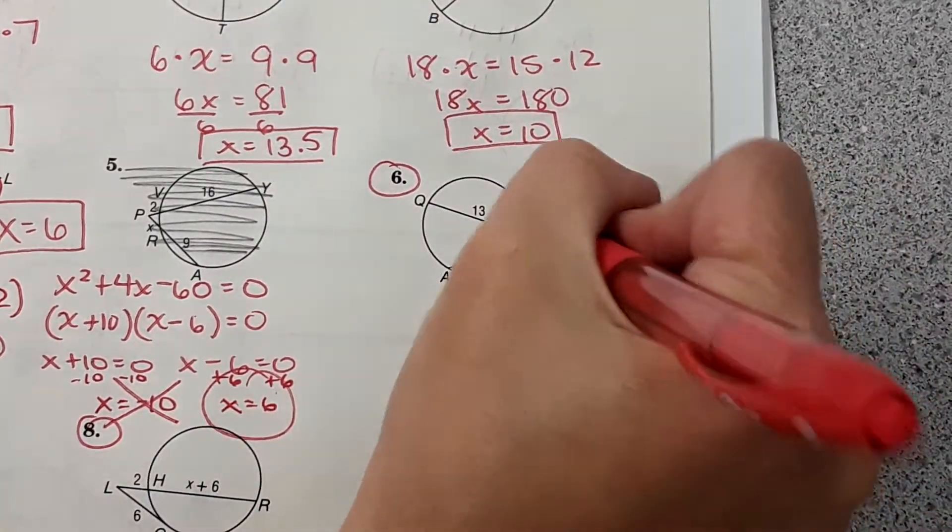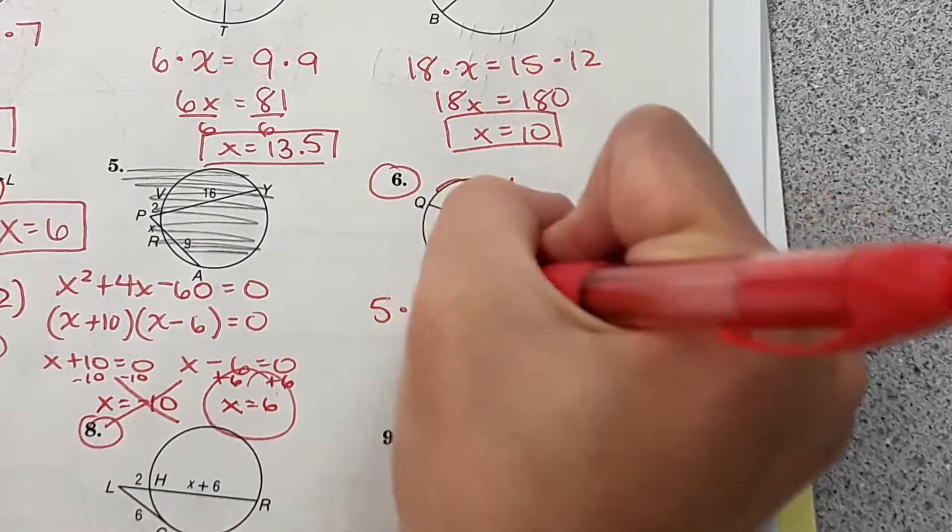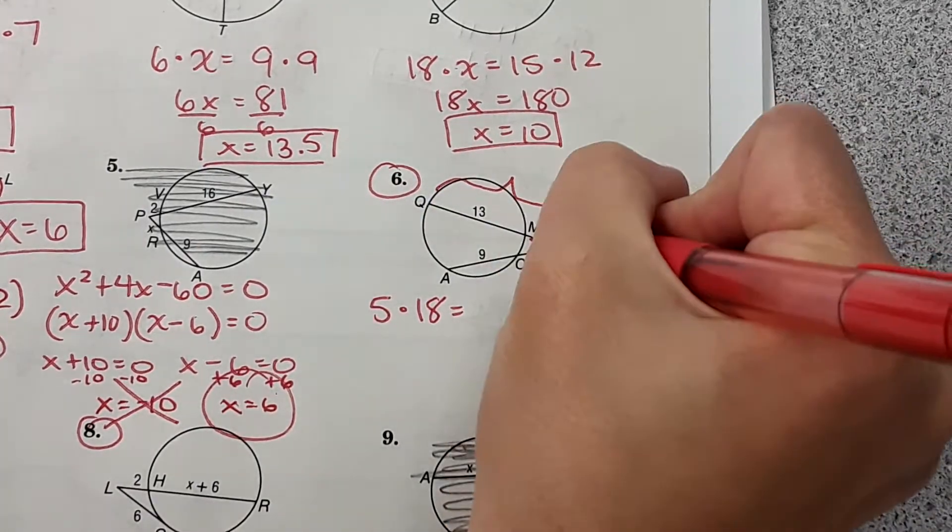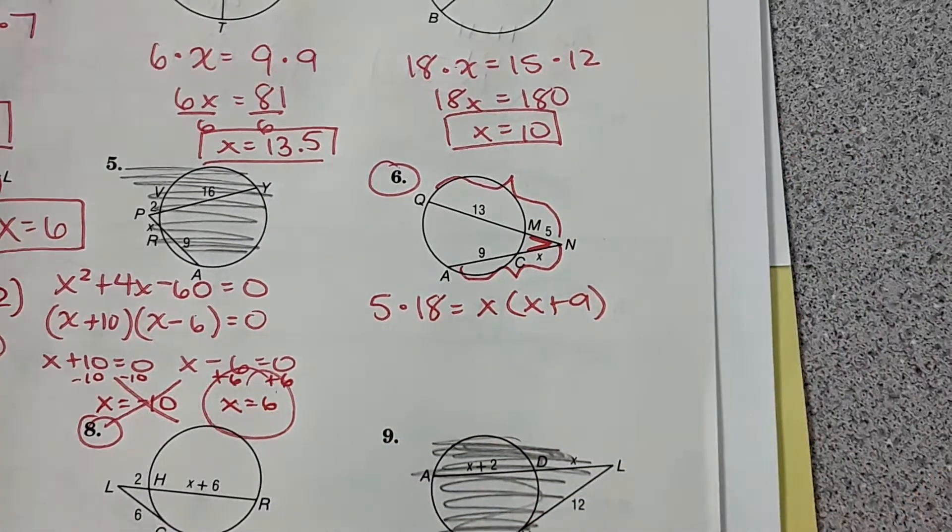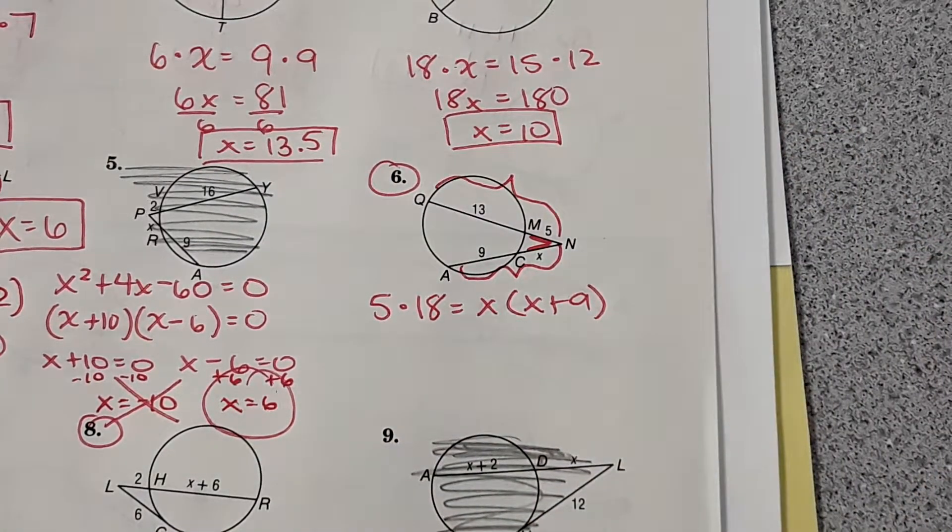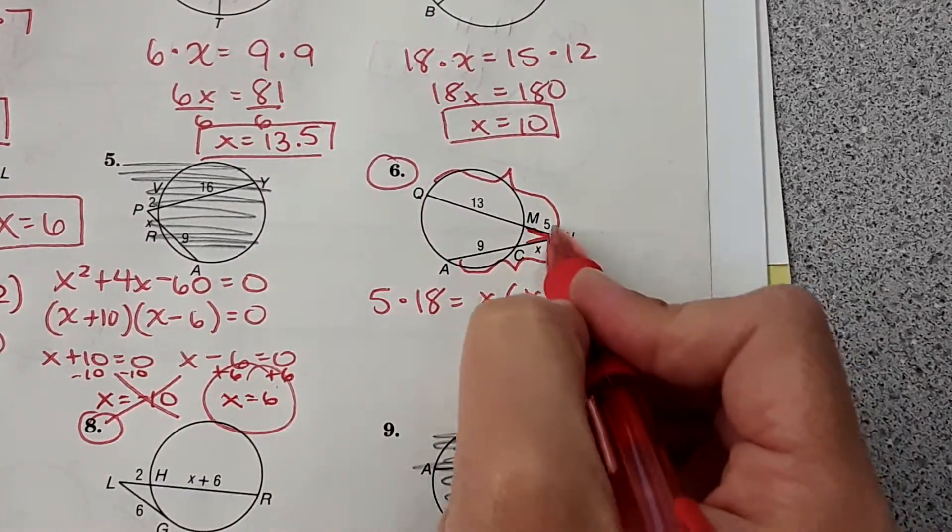Same concept. We're doing 5 times this whole length. 5 times 18 equals x times x plus 9. Did you get 18 because you added that to the whole thing? Correct. It's this length right here times the whole thing.